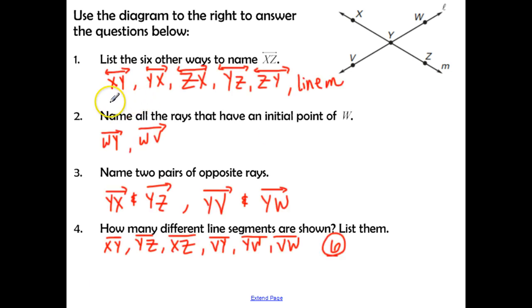Okay, so let's check our answers. For number one, you should have gotten XY, YX, ZX, YZ, ZY, and the very last one, if you weren't sure, see this little M here and also this L here. Sometimes lines can also be labeled by a letter. It's usually lowercase and italicized and right by the arrows, so we can also call this line M.